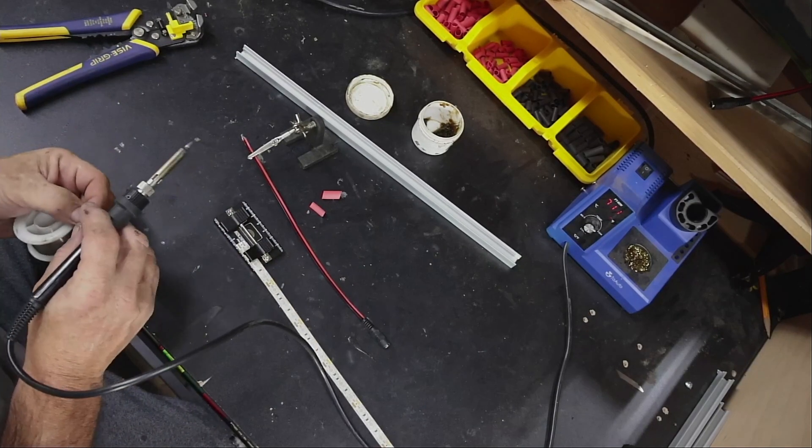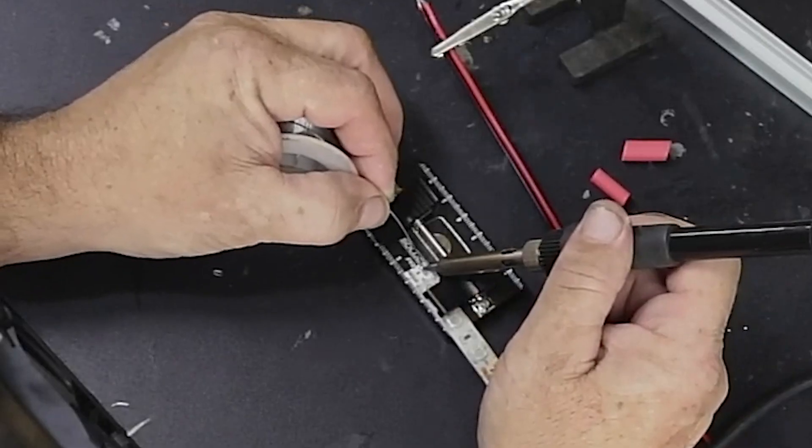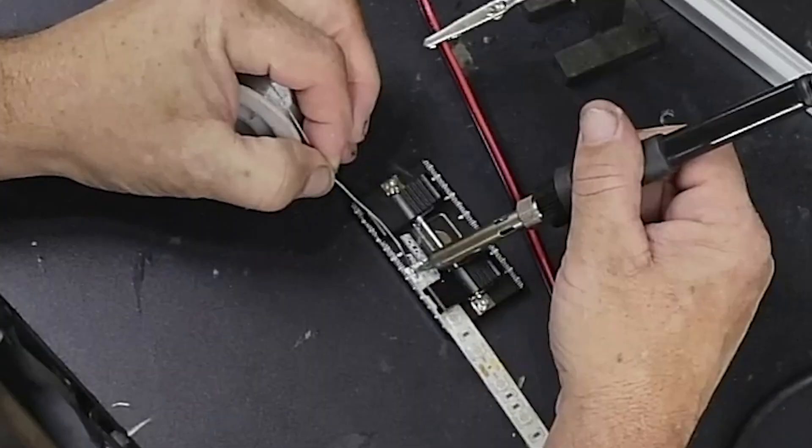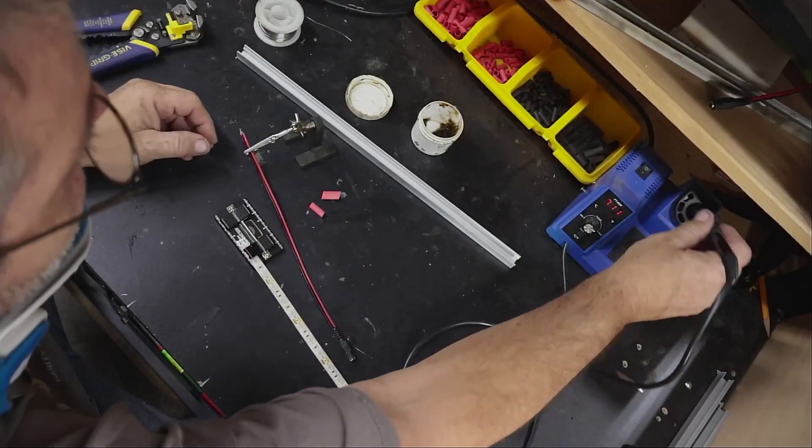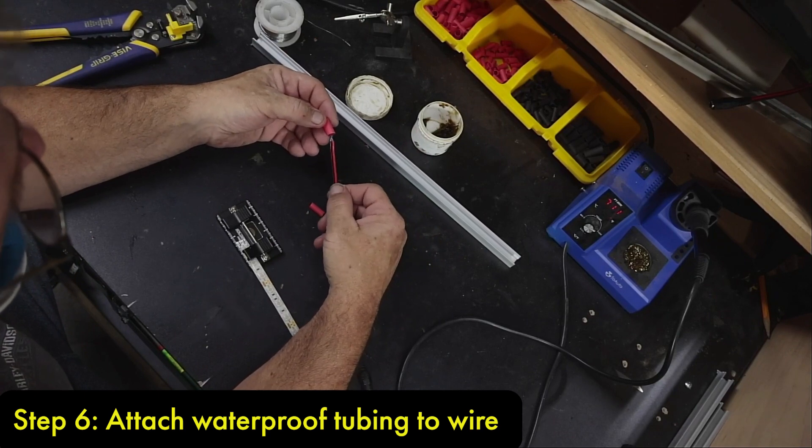That part's done. Now all we have to do is put solder on the copper connections. Just like that. Now you take your wire and take your two pieces of waterproof tubing and put them on there like so.